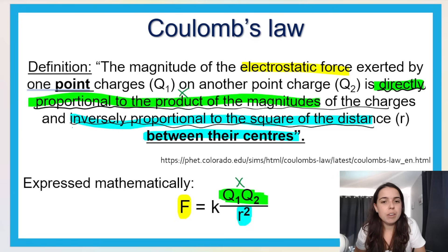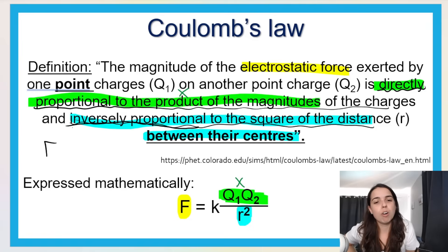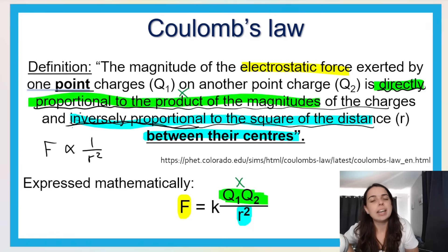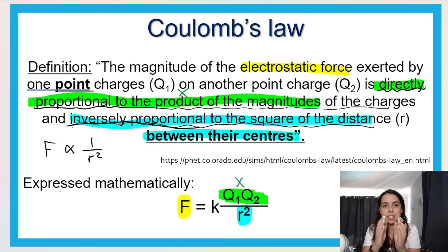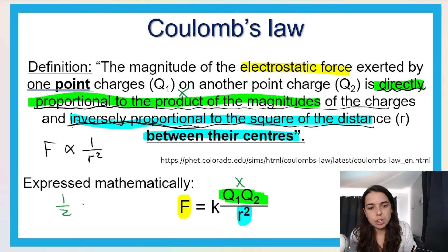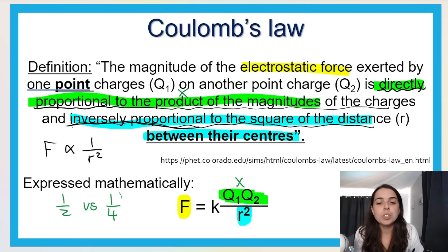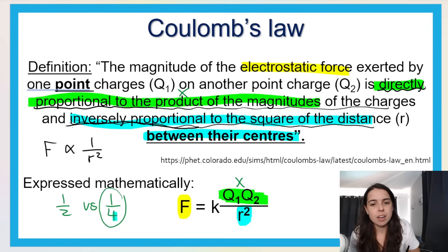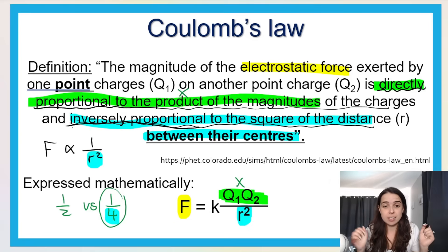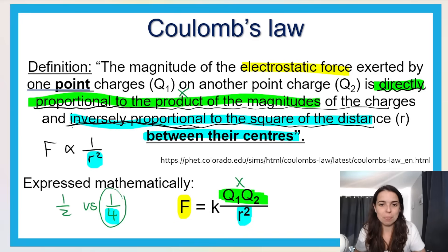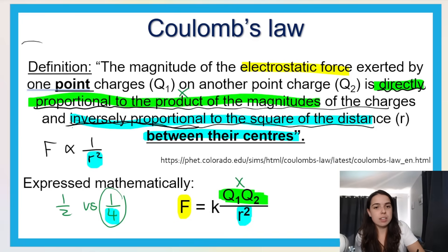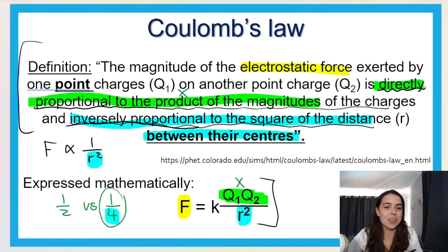Every time you see 'inversely proportional,' think of the quantity being underneath the fraction. What this means is that if the distance gets bigger, the force gets smaller. For example, compare one-half versus one-quarter: a quarter is smaller than a half, but four is bigger than two. So the bigger the distance gets, the bigger r² gets, and the smaller the force gets. I hope you can see how the definition corresponds to the formula. You do need to study and learn the definition.